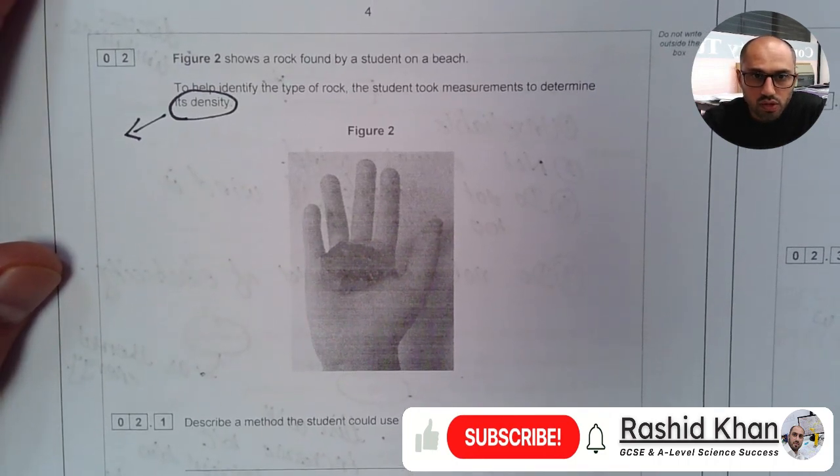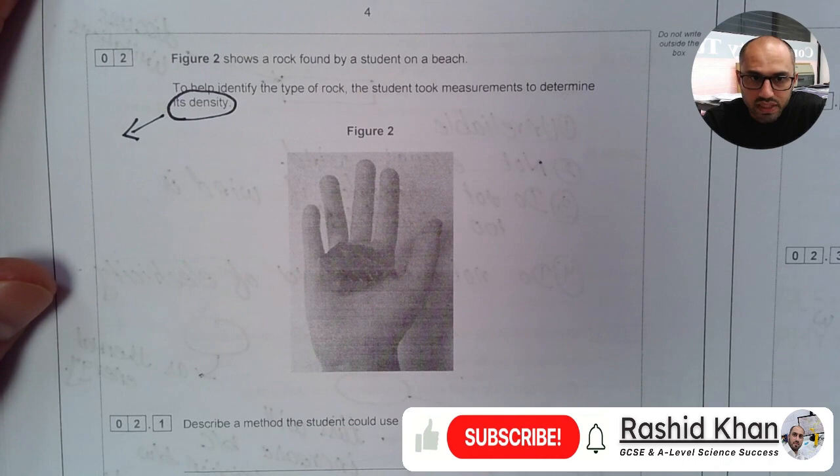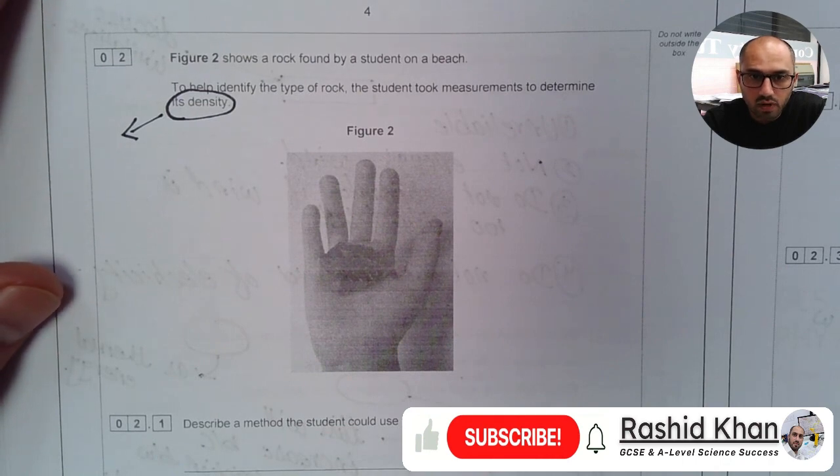Question 2 says, Figure 2 shows a rock found by a student on a beach. To help identify the type of rock, the student took measurements to determine its density.